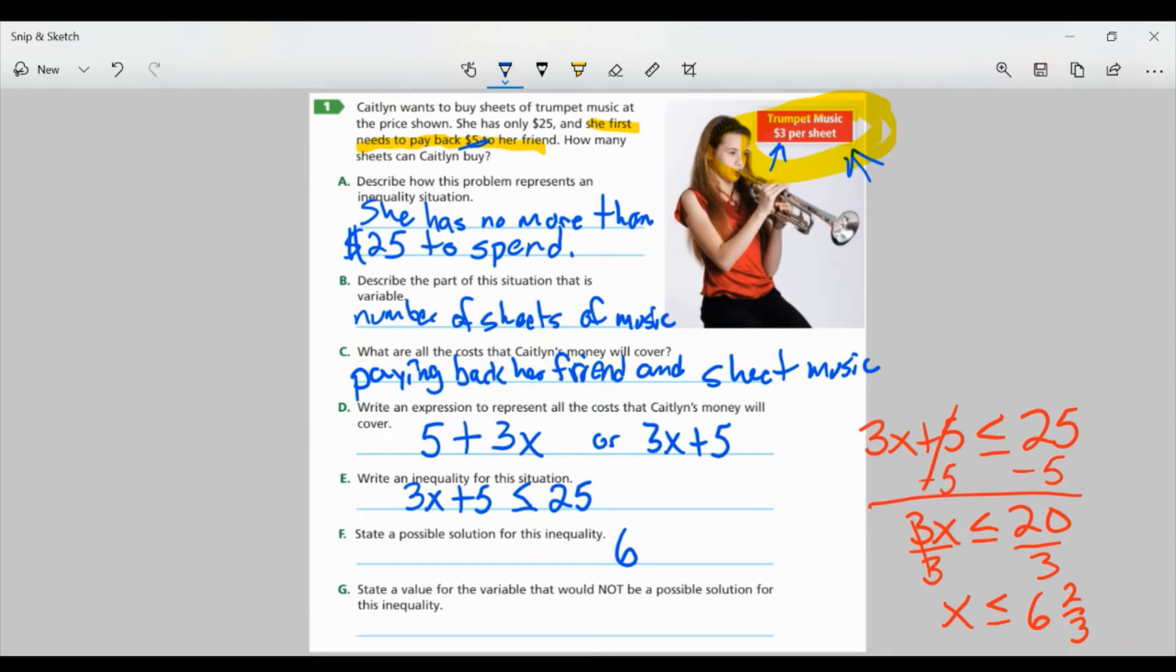Part G state a value for the variable that would not be a possible solution for this inequality. Well, what's one more than 6? 7, right? That's a possible one because she's not going to be able to buy 7 sheets of music. She doesn't have enough. And really, anything over 6 and 2 thirds, she's not going to be able to get, which is 7 and above.